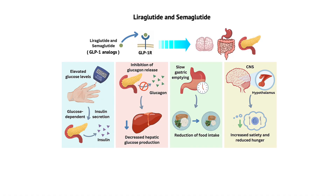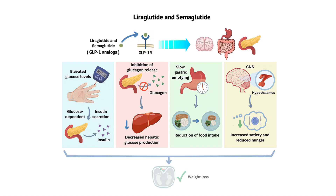In summary, liraglutide and semaglutide, as GLP-1 receptor agonists, exert their weight loss effects through a combination of actions on the pancreas, gastrointestinal tract, and central nervous system. These actions lead to enhanced insulin secretion, reduced glucagon release, slowed gastric emptying, and increased satiety, ultimately contributing to decreased food intake and weight loss.